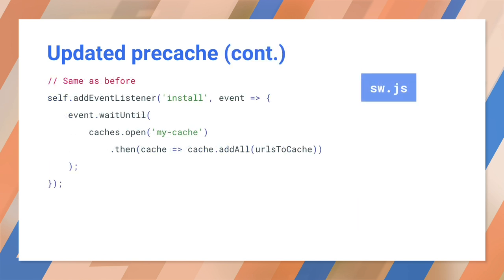The actual pre-cache step looks the same as before. The only real difference is that the shell query was appended to our home page URL. So the forward-slash question-mark shell is pre-cached instead of just the forward slash for our home page — in other words, the shell content is pre-cached instead of the fully server-side rendered page.